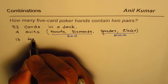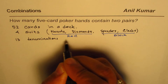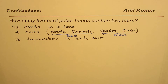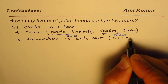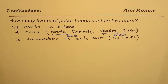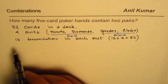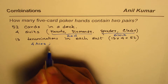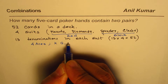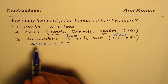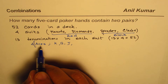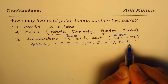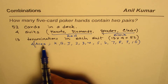Each suit has 13 denominations, so 13 times 4 equals 52 cards. These denominations include aces, king, queen, jack — each of four kinds — and then numbers two through ten, giving us the thirteen cards per suit.